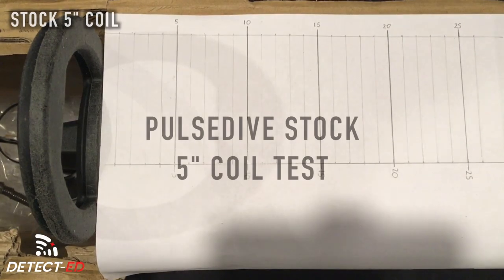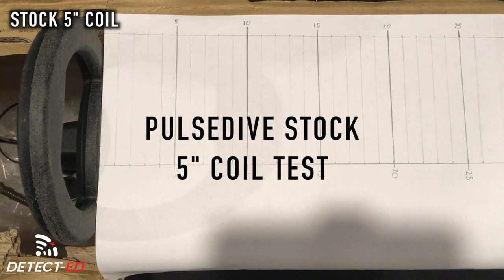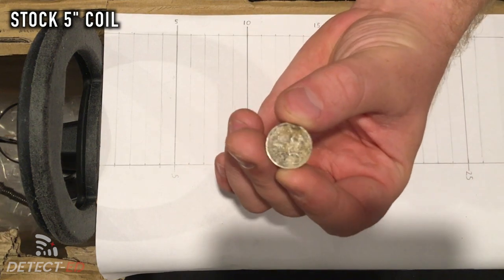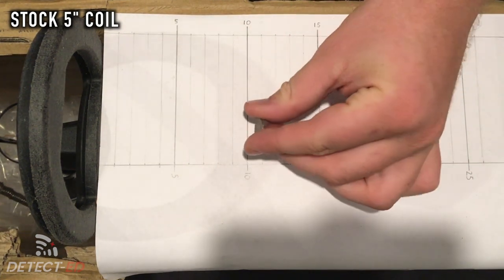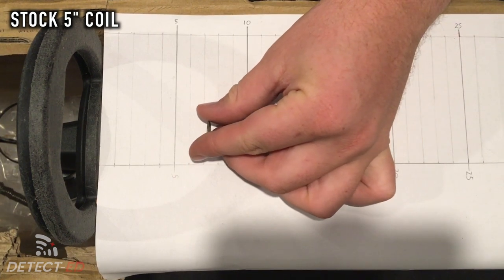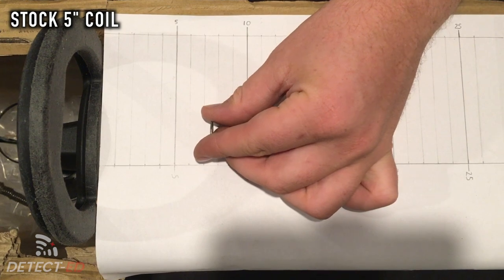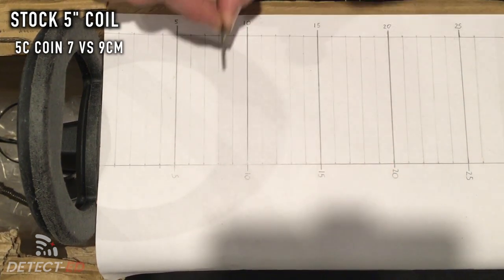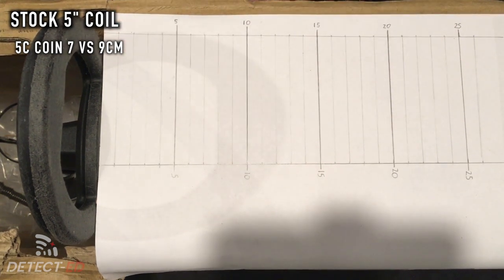We've just put the standard coil on, I'll turn it on and start with 5 cents. 7 centimeters for that target. 10 cents, 11 centimeters is possible.